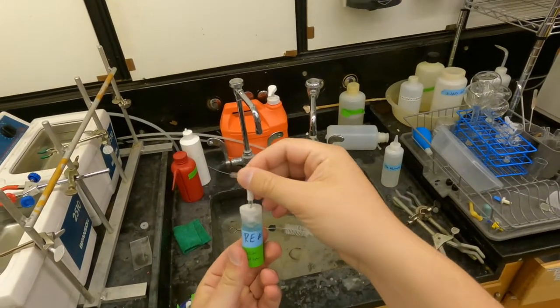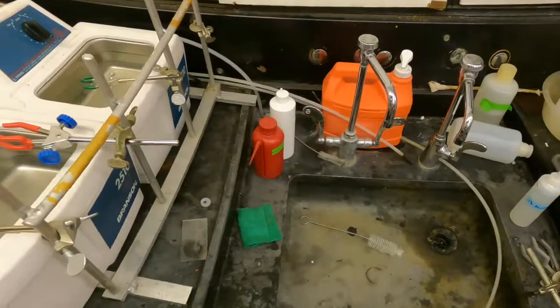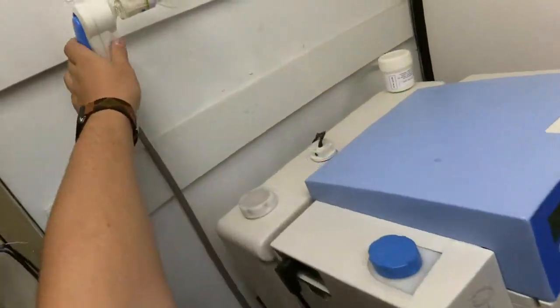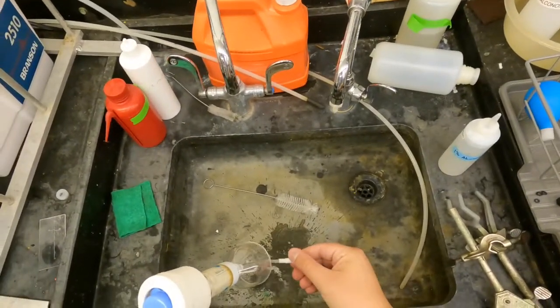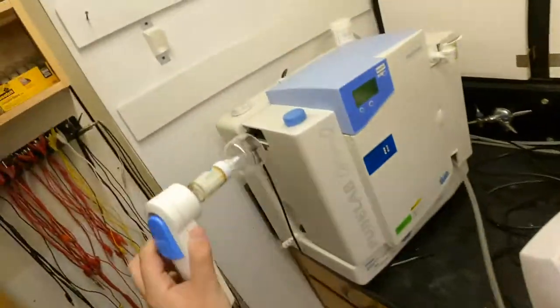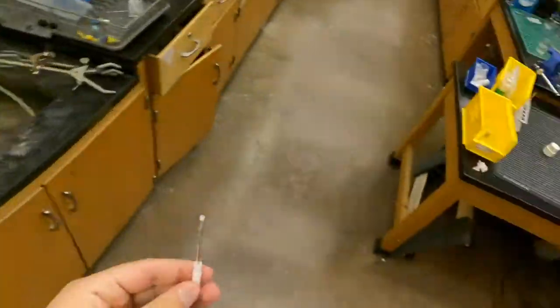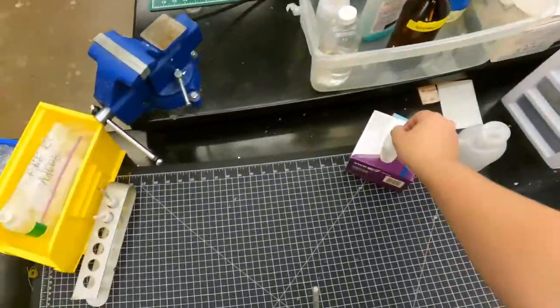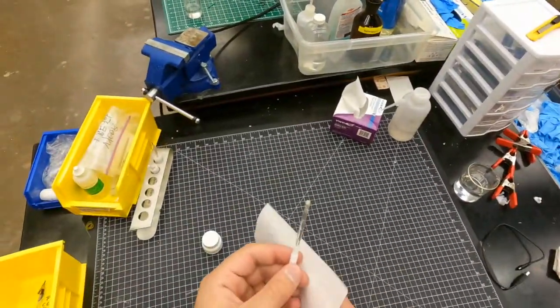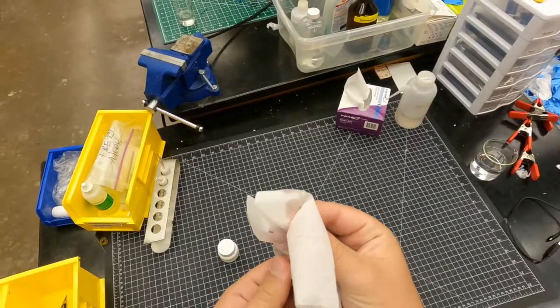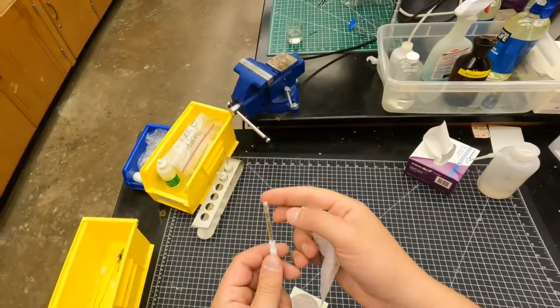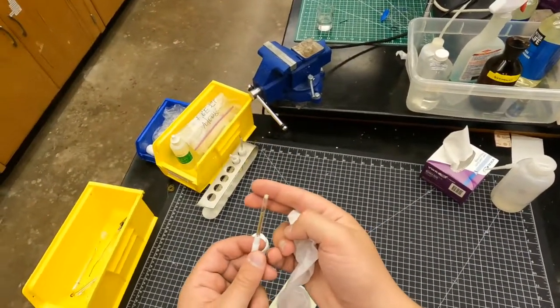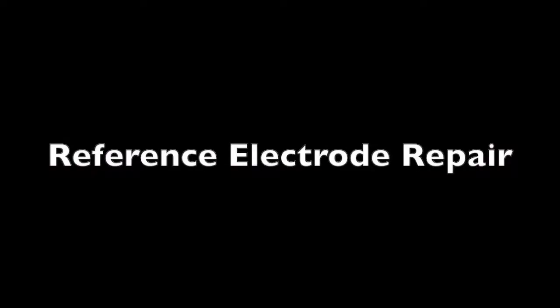For your reference, you're just going to want to rinse it with 18 mega ohm water. This is to get rid of any of the potassium chloride ions that are in the solution in the vial that we store it in. So you're gonna hit it with the 18 mega ohm water, and then be very careful to dry it without touching the frit. So that little opaque part at the tip is the frit that allows ions to transfer in and out, and it needs to stay wet so that the electrode doesn't dry out.